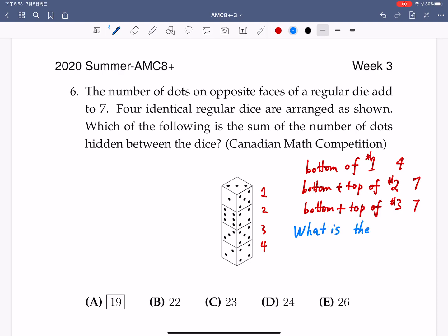The bottom plus the top of number three is seven. Well the most difficult one would be what is the top of the number four die. What is that? Okay the key information we can find out is from the first one. So let me draw the picture of the first one.